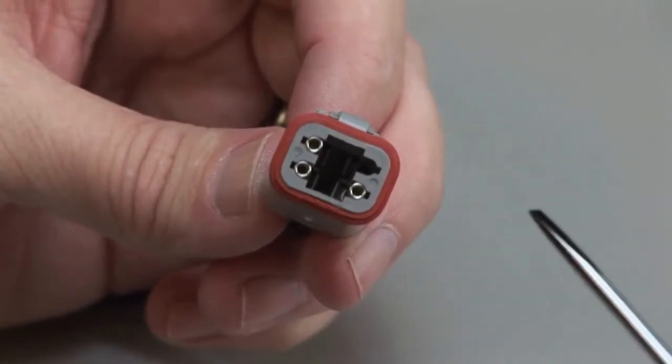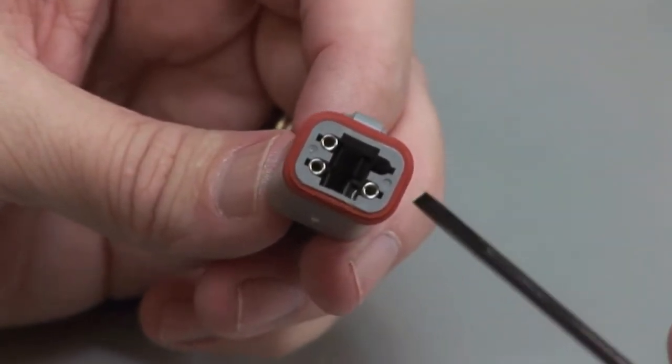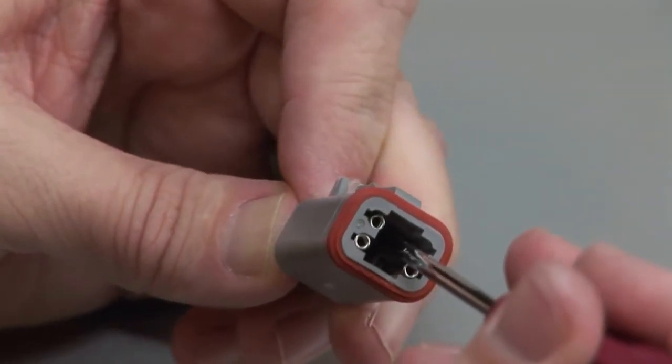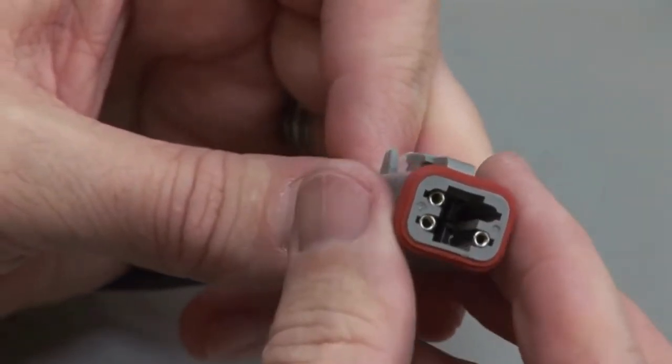To remove the contacts, release the locking finger by moving it away from the shoulder of the contact, while at the same time gently pulling the wire through the rear grommet.